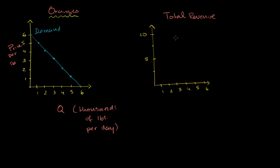So let's just figure out total revenue first. Obviously, if we produce nothing — if we produce zero quantity — we'll have nothing to sell. Total revenue is price times quantity. Your price is six, but your quantity is zero, so your total revenue is going to be zero if you produce nothing.